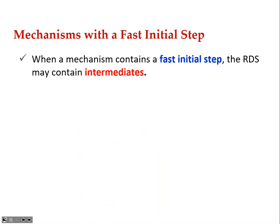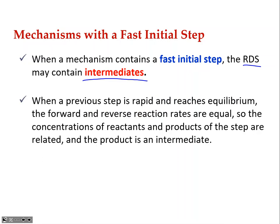Now we're going to talk about mechanisms with a fast initial step — this is the harder version of figuring out the rate law from a mechanism. When the slow step is not the first step and the rate-determining step comes later in the series — either the second or third elementary step — your rate-determining step may contain some intermediates on the reactant side.